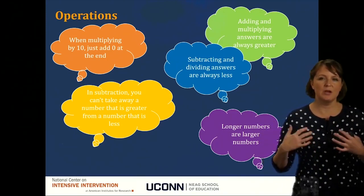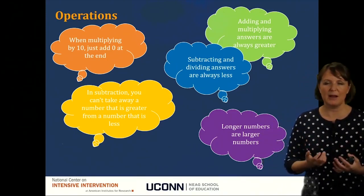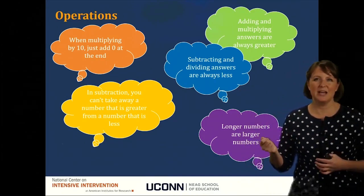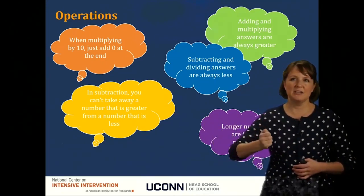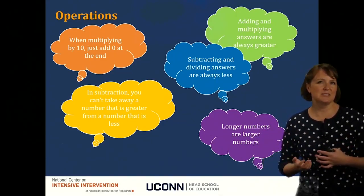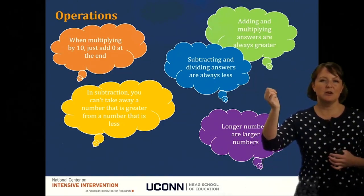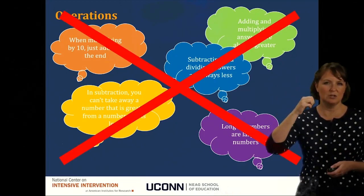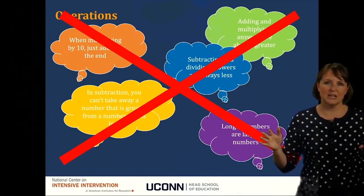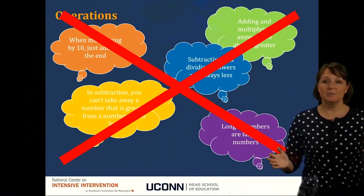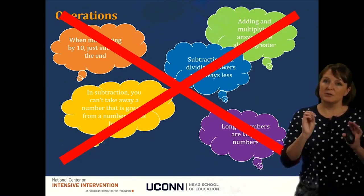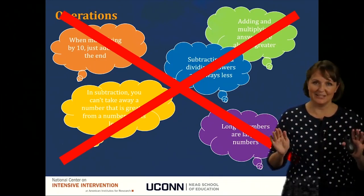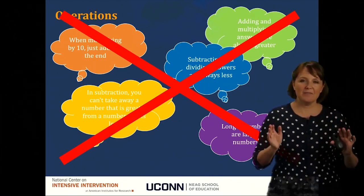This comes from the article about the thirteen rules that expire. Maybe students have learned: when multiplying by 10, just add a zero at the end; in subtraction, you can't take away a number that's greater from a number that's less; subtracting and dividing always give you answers that are smaller; adding and multiplying always give you answers that are greater. All of these things fall apart when it comes to rational numbers. So when you're teaching whole numbers, make sure you aren't saying these things, because they're only halfway true.